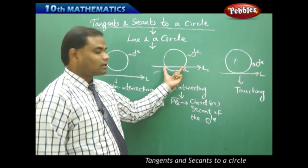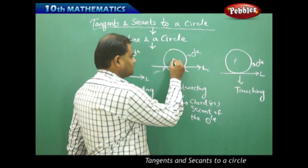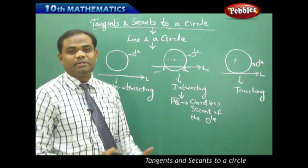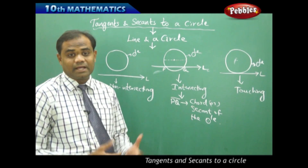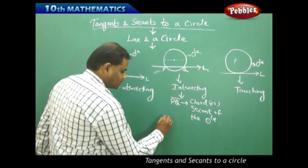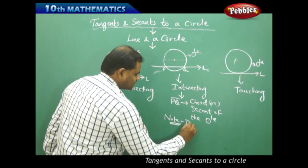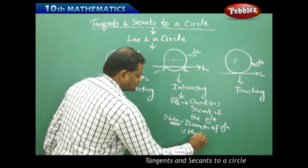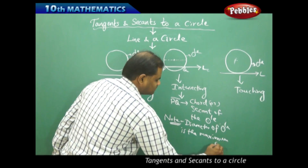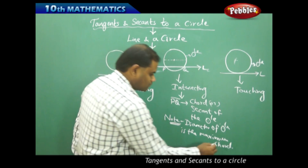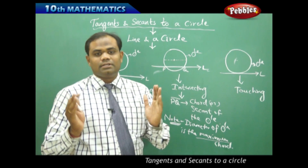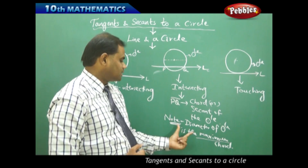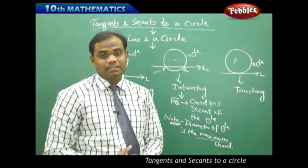The chord or secant is always less than or equal to the diameter, because the diameter is the maximum chord. The diameter is that length where we have the highest segment of the circle. So the diameter of the circle is the maximum chord of the circle — the highest segment — referred to as the maximum chord.